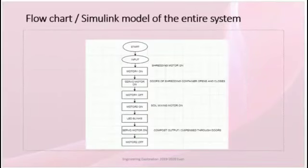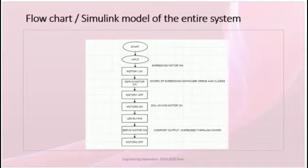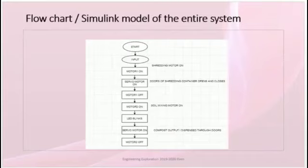Here is the flowchart of the model. First, we input the organic waste. The shredding motor turns on, cuts the material, stores it in a container, and dispenses it through the doors via servo motors, then automatically switches off. Next we give input to the machine; motor 2, the soil mixing motor, starts rotating. Mixing of soil and organic waste takes place, and after a certain time the compost forms. The LED starts to blink, the compost is dispensed through the door via servo motors, and motor 2 and the servo motors turn off.